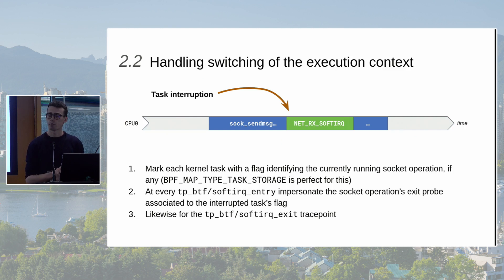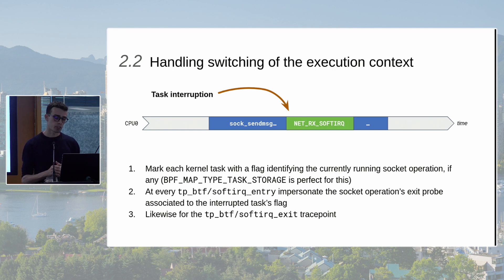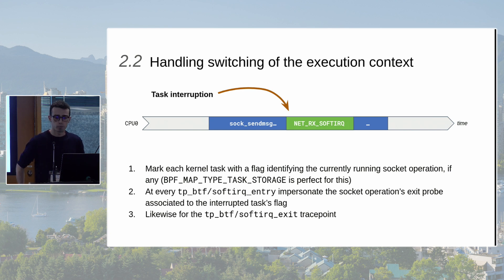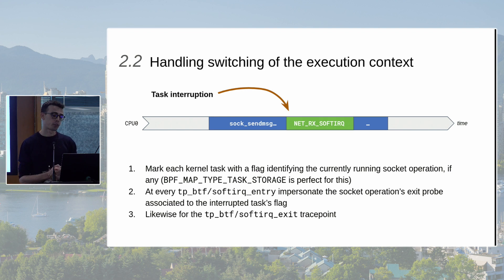Unfortunately this is not the only scenario, and there are a couple of problematic cases. Two of the entry points are softqueues, and in Linux softqueues can run in interrupt context — they can also run as NAPI kernel threads — but they can also run in interrupt context and thus interrupt other tasks. In particular, softqueues can interrupt tasks on which socket operations are already running, resulting in incorrect measurements.